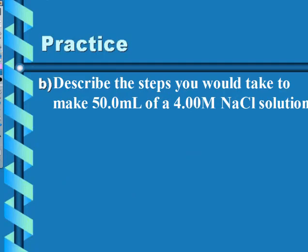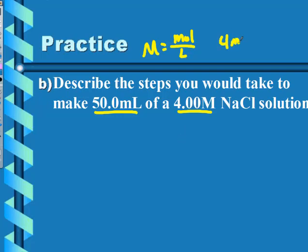This problem wants us to describe the steps to make a solution. To make a solution of a certain molarity and volume, we need to know the mass of sodium chloride required. So step one is to figure out the mass of sodium chloride. We know molarity is moles per liter, so four molarity is four moles for every one liter — that's a conversion factor.